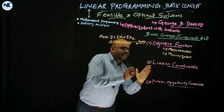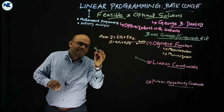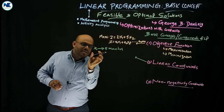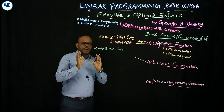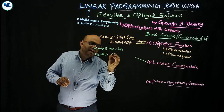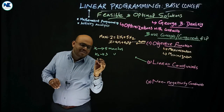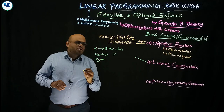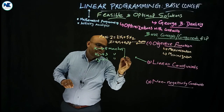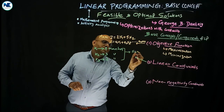To understand linear constraints with an example: suppose x1 requires 5 man-hours, x2 requires 3 man-hours, and x3 requires 2 man-hours. The constraint is that total availability of man-hours is 500. So we write the linear constraint as: 5x1 + 3x2 + 2x3 ≤ 500.